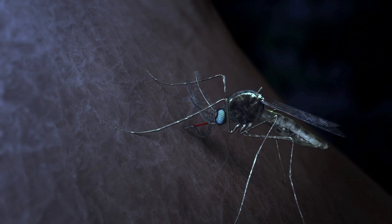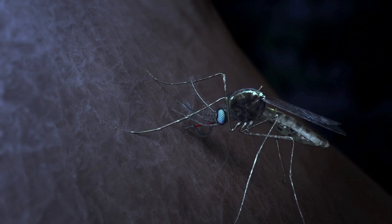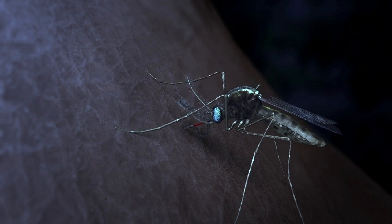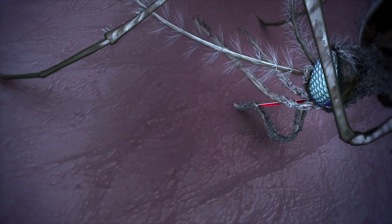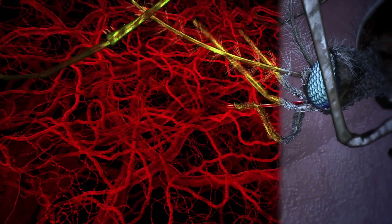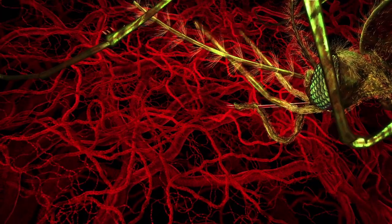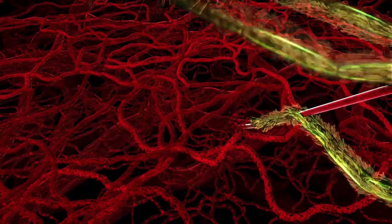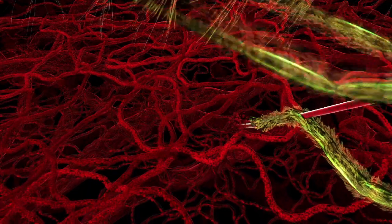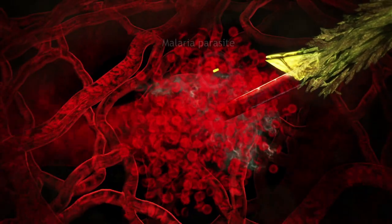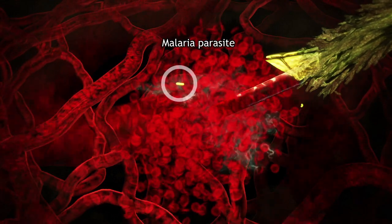This mosquito is infected with the malaria parasite. Because she is pregnant, she has become hungry for human blood. During the bite, she injects saliva to stop the blood from clotting. Her infected saliva also carries the malaria parasite.